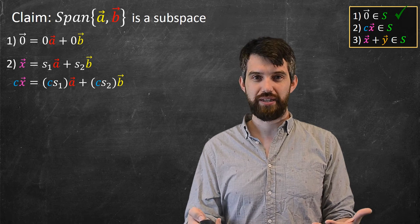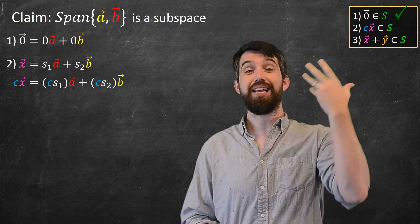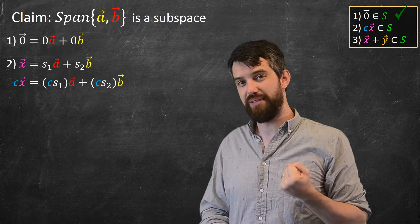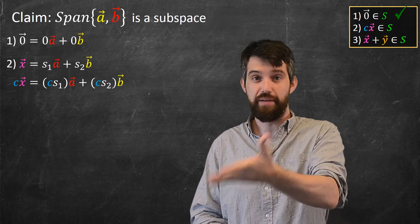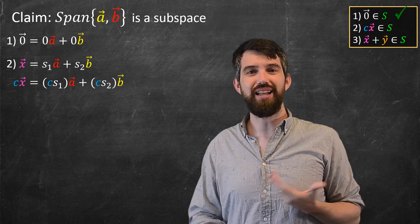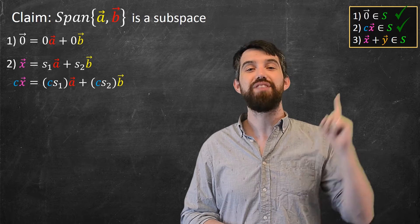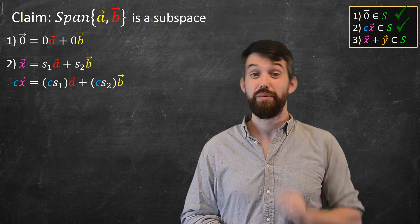But because of the way linearity works, I can just take the C and I can distribute it over the vector addition. And it becomes a constant CS1A and a constant CS2B. Well, what's this? This is just a linear combination of A and B. It's just got different coefficients. So indeed, we have the second property also being true. Looking pretty good.